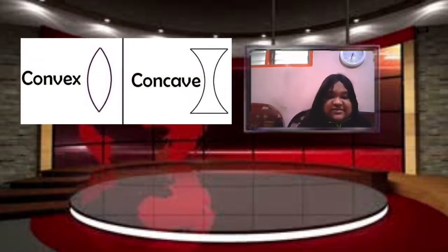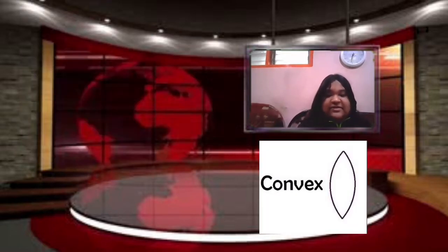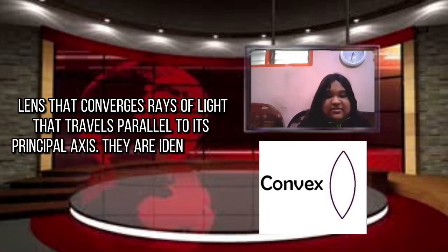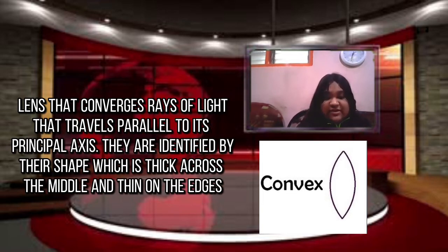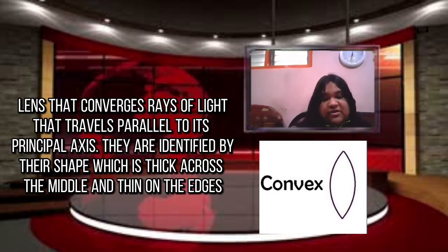There are two types of lenses: convex lens and concave lens. A convex lens is a lens that converges rays of light that travel parallel to its principal axis. They are identified by their shape, which is thick across the middle and thin on the upper and lower edges.